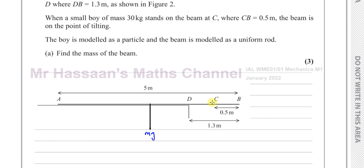The boy is standing at C, which is 0.5 metres in from B. That boy has a mass of 30 kilograms, so the weight of the boy is 30g newtons. The beam is on the point of tilting, so there is a reaction force at the edge — at point D where the beam pivots. This end is about to lift off the floor, so there is just a reaction force at the pivot point. These are the three forces acting on the beam.